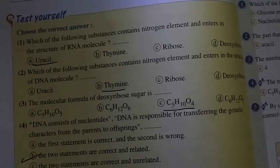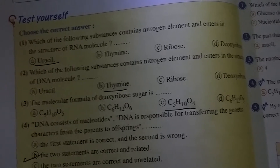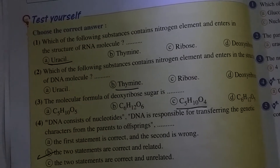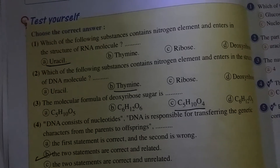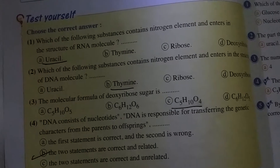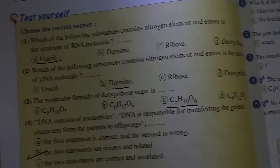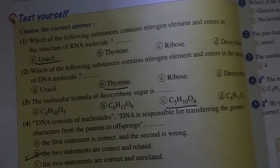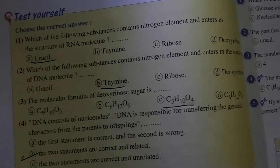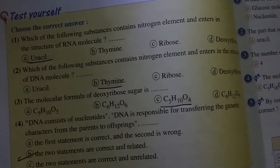Which of the following substances contains nitrogen element and enters in the structure of a DNA molecule? Uracil is a special nitrogenous base of RNA, so it is not the answer. Thymine is the correct answer, as it contains nitrogen and is a constituent of DNA.